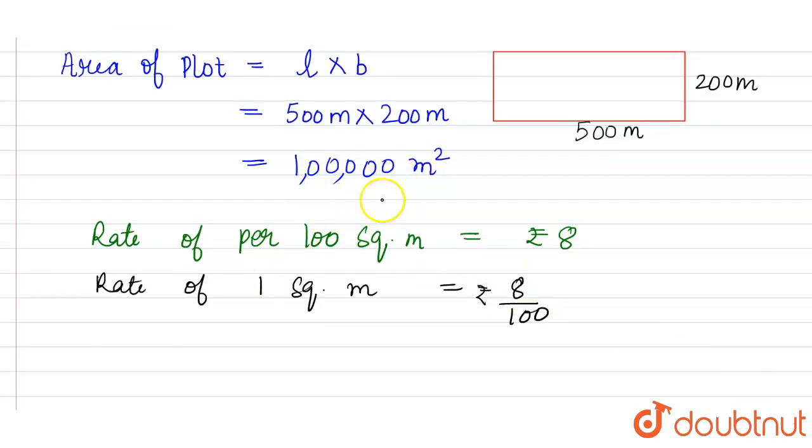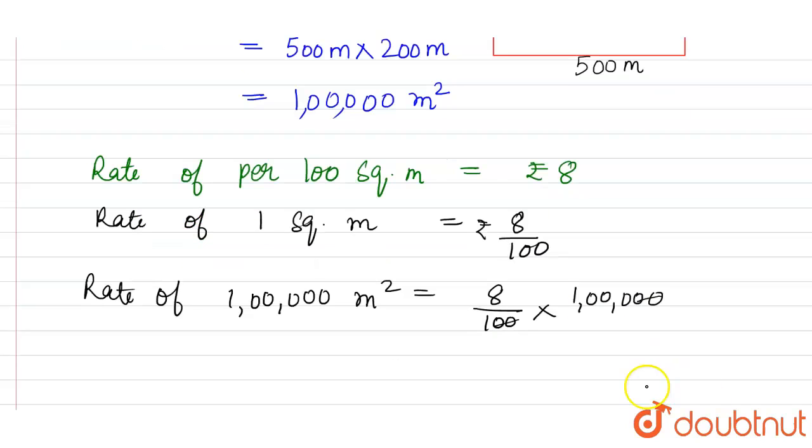We have to find the cost of 1 lakh meter square. Therefore, rate of 1 lakh meter square equals 8 divided by 100 into 1 lakh. So two zeros will be cancelled with two zeros. Answer is 8,000 rupees.